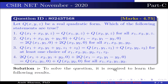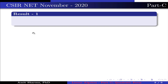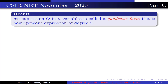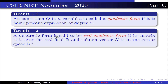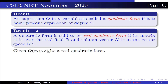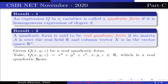To solve the question, it is required to learn the following results. Result 1: An expression Q in n variables is called a quadratic form if it is a homogeneous expression of degree 2. Result 2: A quadratic form is said to be a real quadratic form if its matrix A is over the real field R and the column vector x is in the vector space R^n. We take Q(x, y, z) = x² + y² + z², where x, y, z belong to R, as our real quadratic form example.